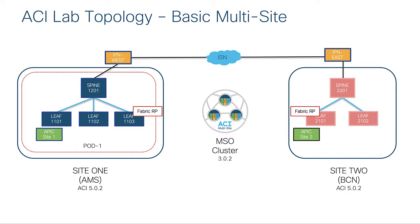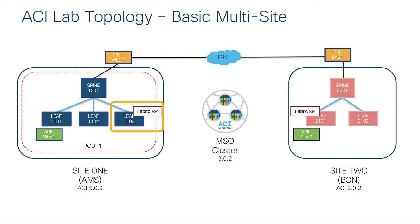Here's my lab. This topology should be familiar — nothing has really changed. I had upgraded my ACI fabric to ACI 5.0.2 and my MSO to 3.0.2. One reason for the upgrade is that in order to do fabric rendezvous point with multi-site, you need to be on ACI 5. Also, for fabric RP in multi-site, we need to designate border leaves as the rendezvous point. I've designated leaf 103 in site one and leaf 2101 as the fabric RP for Barcelona.